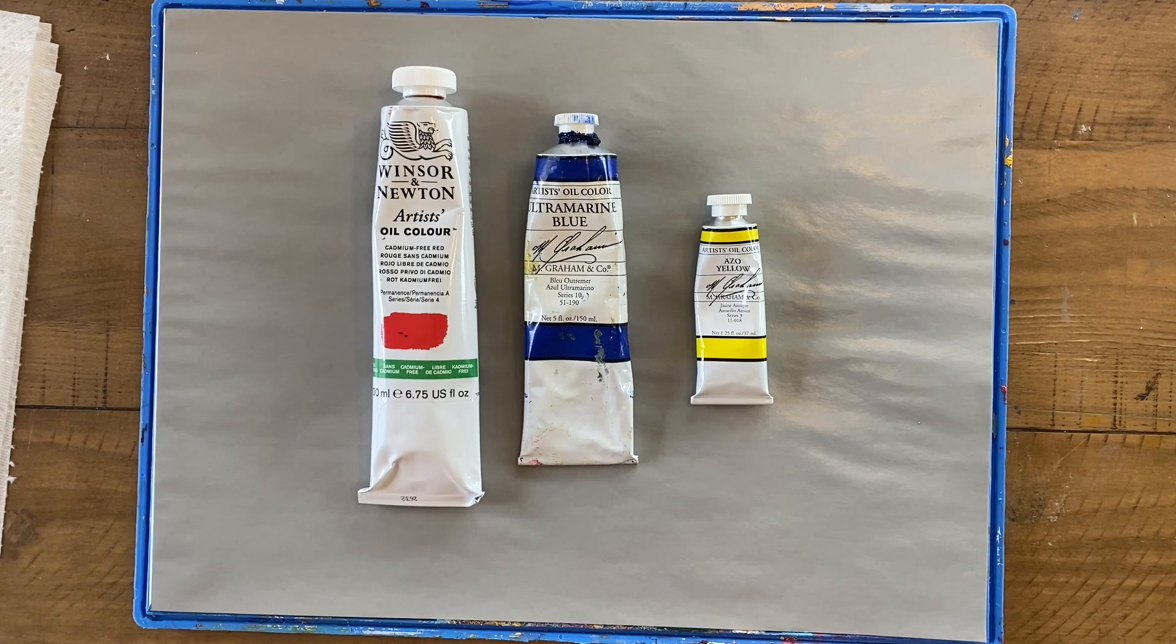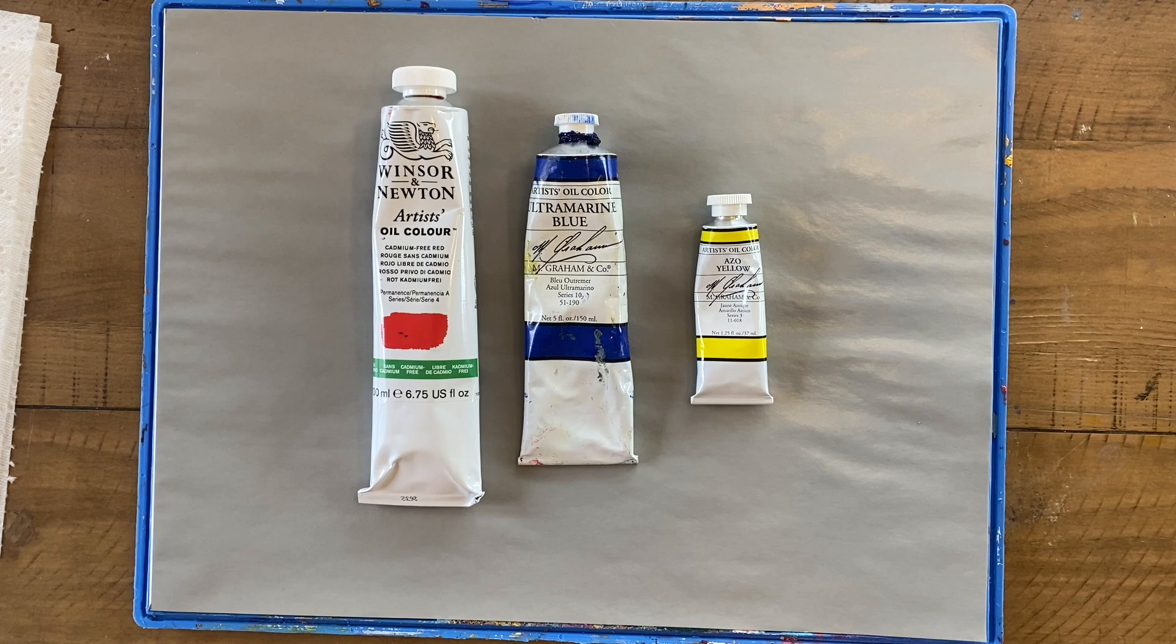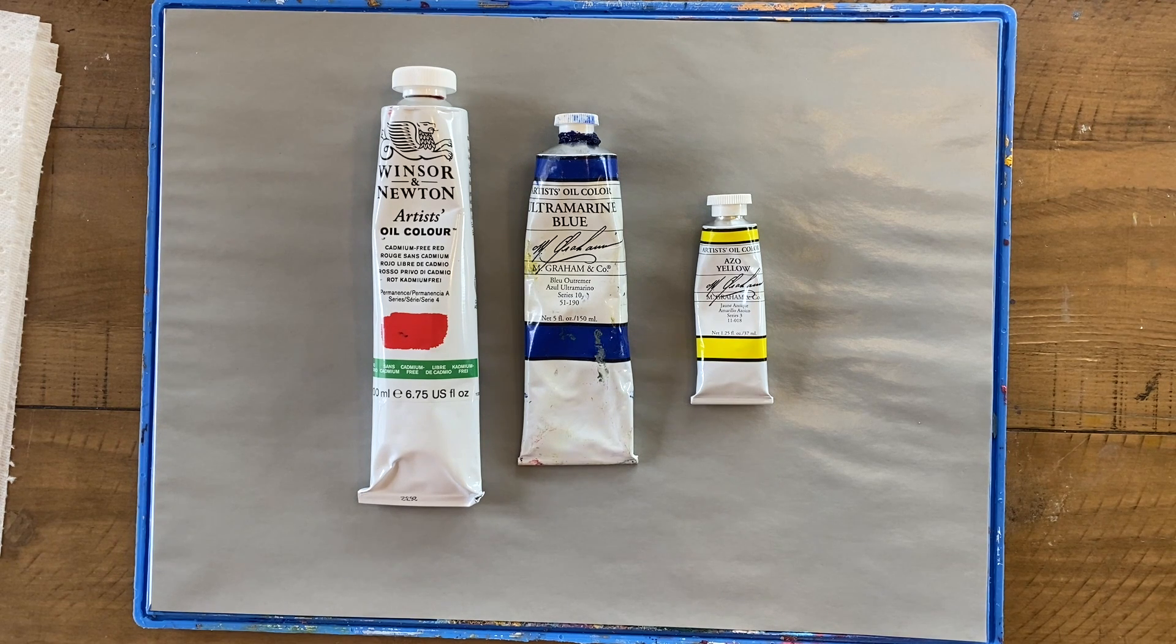One of the things we all learn as kids is the primary colors are red, blue, and yellow. I remember learning two things about primary colors: that you can use the three primary colors to mix any color in the color wheel, and that you cannot mix the primary colors. But it turns out we have some reason to doubt both of those things.